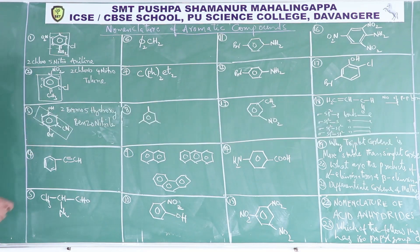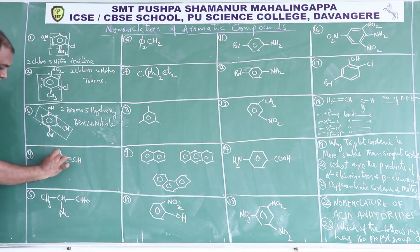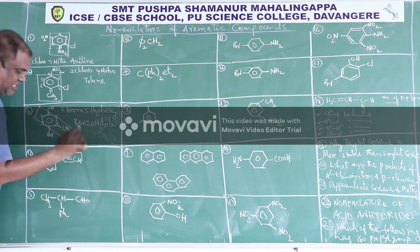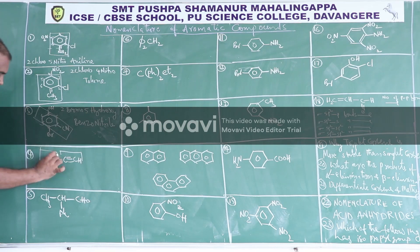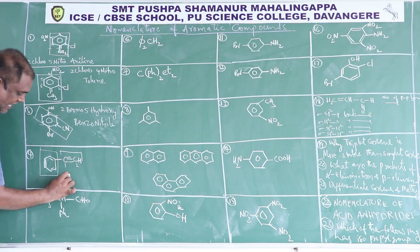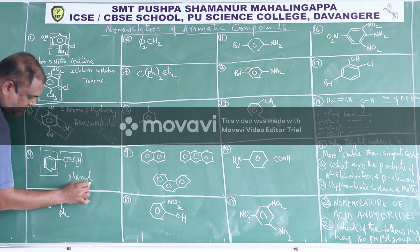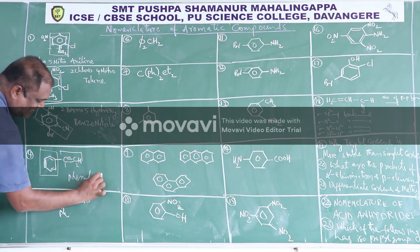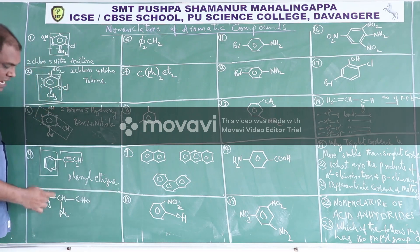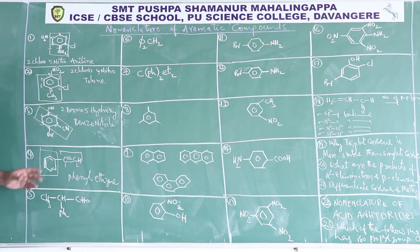Here there is no other option; we must consider this as the main chain and the benzene ring becomes the side chain. If this is a side chain, the side chain is named as phenyl. So 1-2 carbons: phenyl is the prefix, root word is eth, primary suffix is yne, and there is no functional group. So it is phenylethyne.